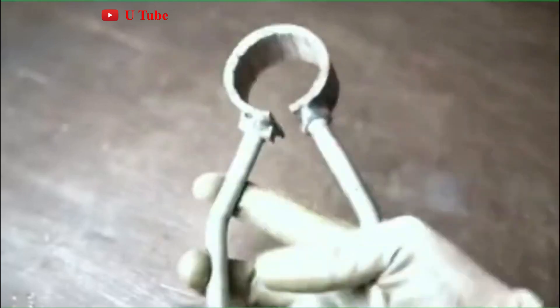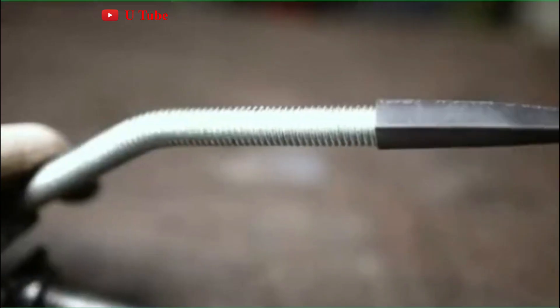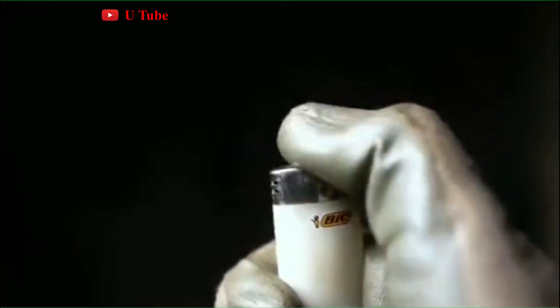Here an adjustable plier fabricated from a simple round pipe and nut bolts is shown with which you can grip and open a drill chuck easily.